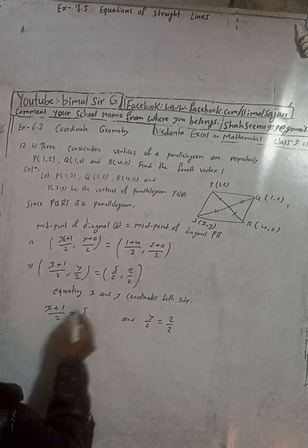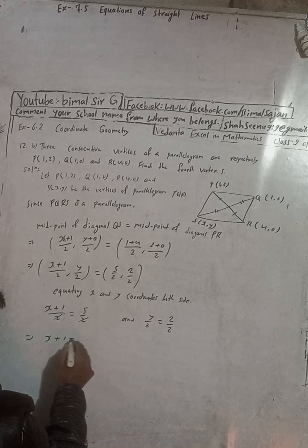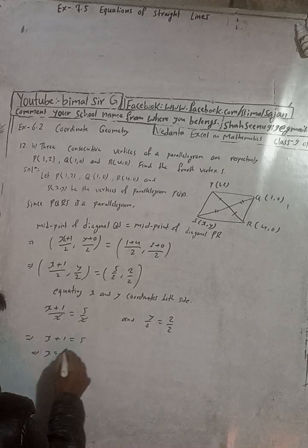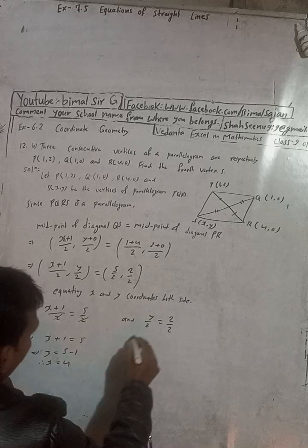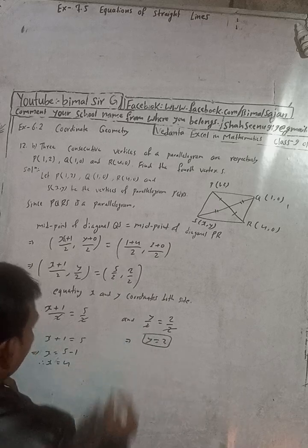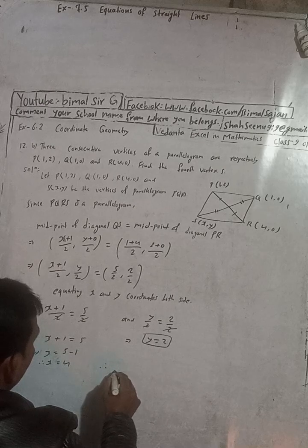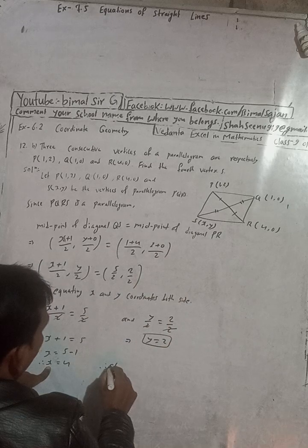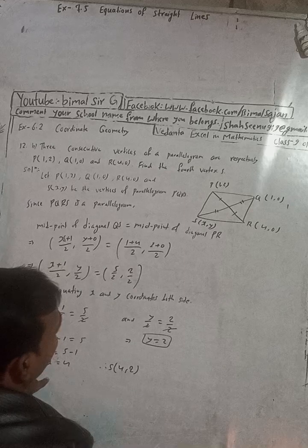Solving the x part: the 2s cancel, so x+1 = 5, therefore x = 4. Solving the y part: the 2s cancel, so y = 2. Therefore, the fourth vertex S is (4, 2).